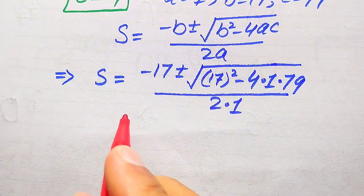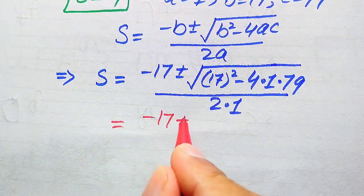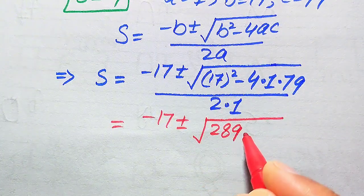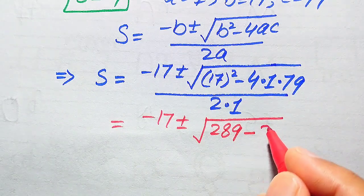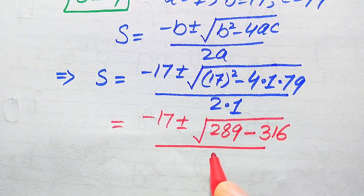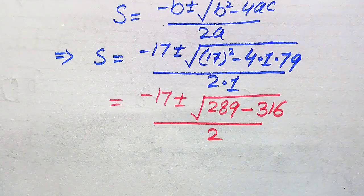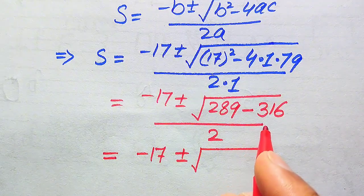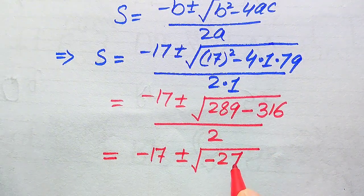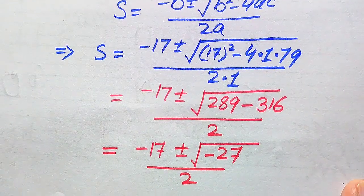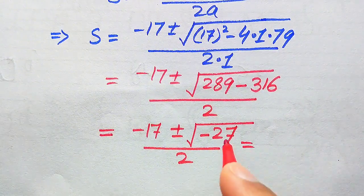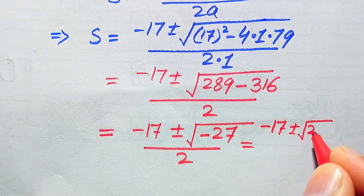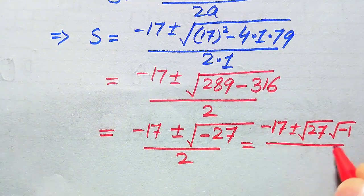Simplifying: 17² = 289, and 4 × 79 = 316, so the discriminant is 289 − 316 = −27. The denominator is 2 × 1 = 2. So we have s = (−17 ± √(−27)) / 2. We separate the square root as √27 × √(−1).